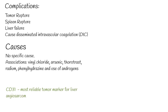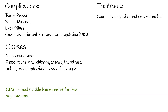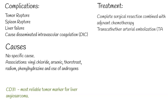CD31 is considered the most reliable tumor marker for liver angiosarcoma. Treatment involves complete surgical resection combined with adjuvant chemotherapy, considered the most effective approach. Transcatheter arterial embolization (TAE) — blocking an artery with the help of a catheter — can also be used to prevent further bleeding or limit blood supply to the tumor.